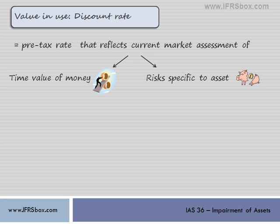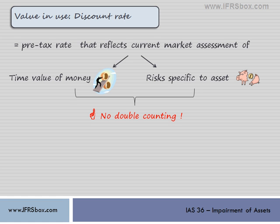When determining the discount rate, we must not forget that any risk or factor that was considered and included in cash flows shall not be incorporated into the discount rate assessment, and vice versa. For example, when our cash flows already reflect certain risks associated with the asset, the discount rate shall not incorporate the same risks, otherwise these would have been counted twice and that could lead to a distorted value in use.